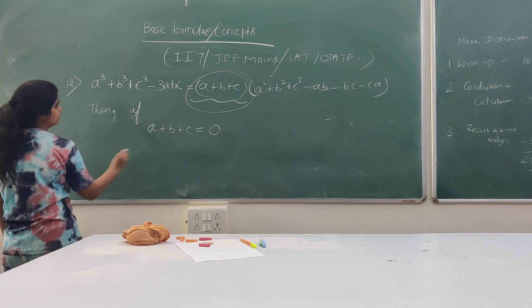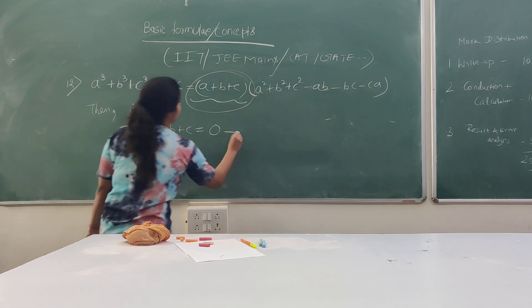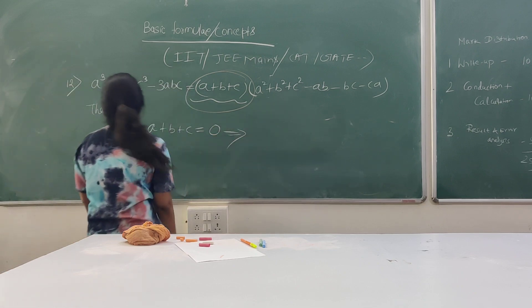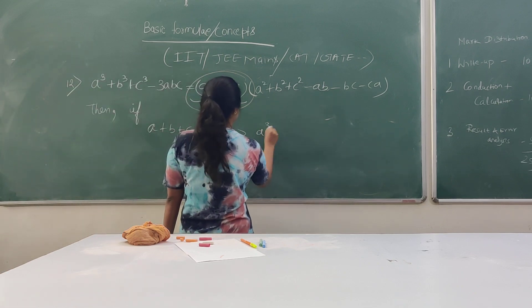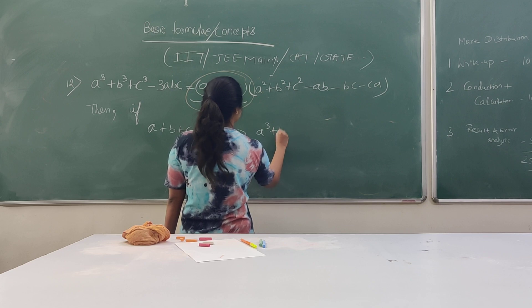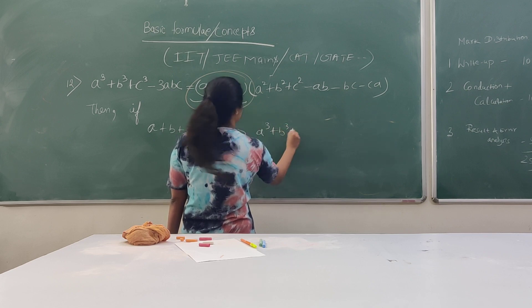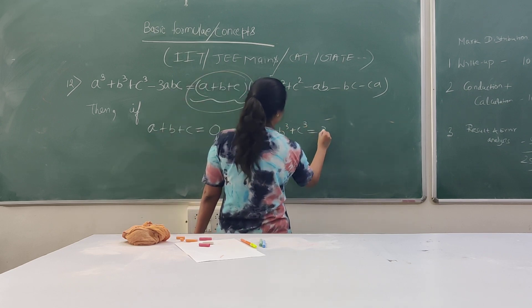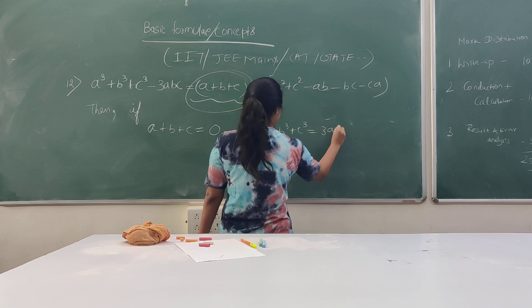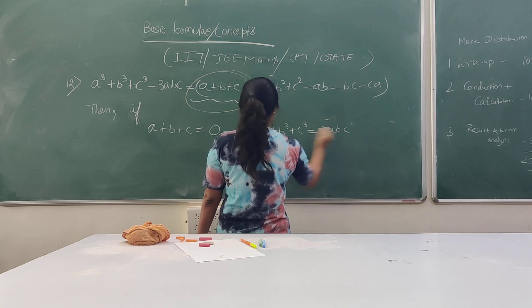So then AQ plus BQ plus CQ — and we can say this thing is greater than B — plus BQ, plus BQ, plus BQ, AQ.